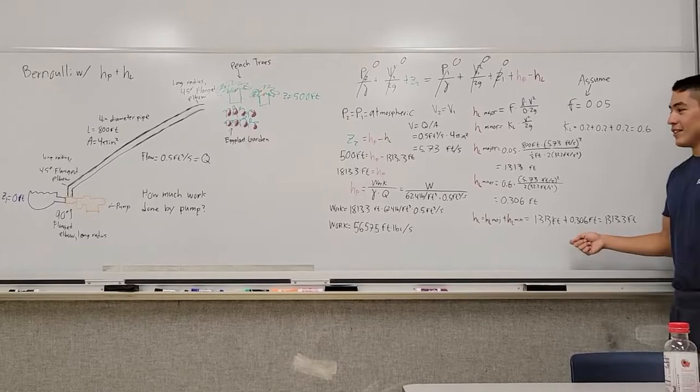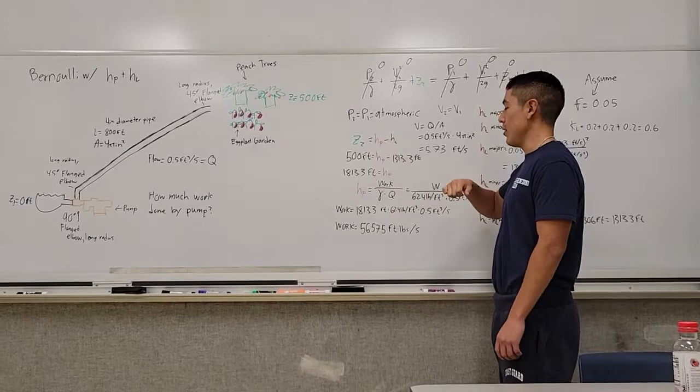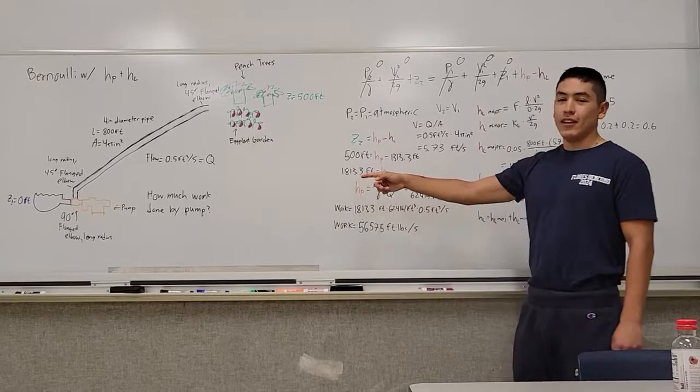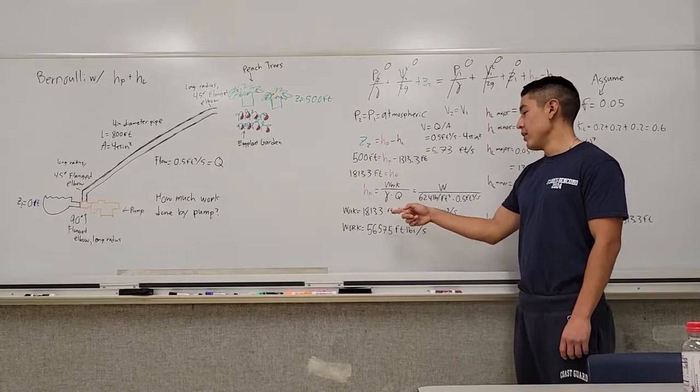We add up the minor and major head loss to get a total head loss of 13.3 feet. Then we plug in what we solved there into our equation, and we have to solve for head pump, and it ends up being 513.3 feet.